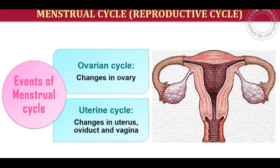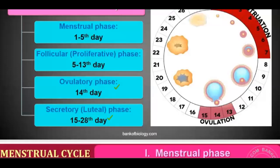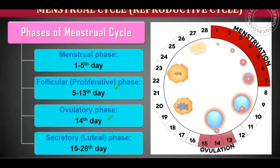The menstrual cycle involves changes in the reproductive system — the ovarian cycle, which involves changes in the ovary, and the uterine cycle, which involves changes in the uterus. The days of the menstrual cycle are very important to learn properly.